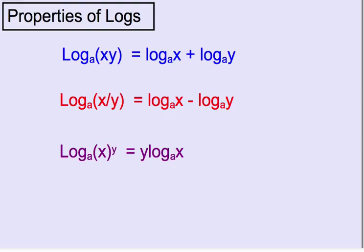The first property shown here involves taking a logarithm of x times y and separating it into two separate logarithms — one for x and one for y. Notice the operation is plus: when you multiply inside the logarithm, the operation that separates them is going to be addition.